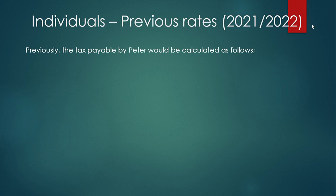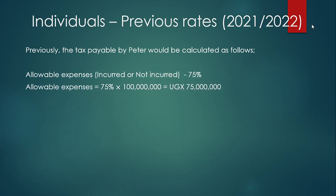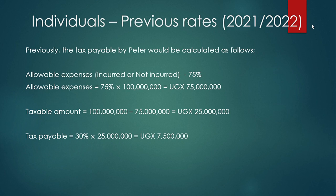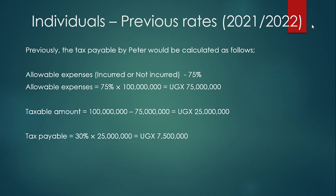Comparing this to last year — the allowable expenses were 75 percent, which was granted whether incurred or not. So the taxpayer did not need to keep any receipts. That 75 percent deduction left a taxable amount of 25 million shillings, and tax at 30 percent would have been 7.5 million shillings. So there is a slight increase — from 7.5 million last year to 11.6 million this year.